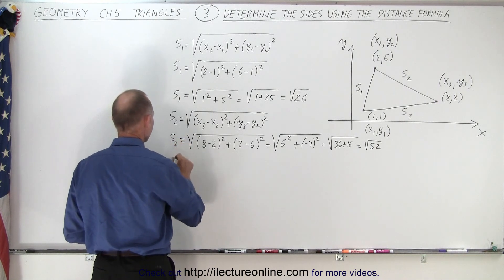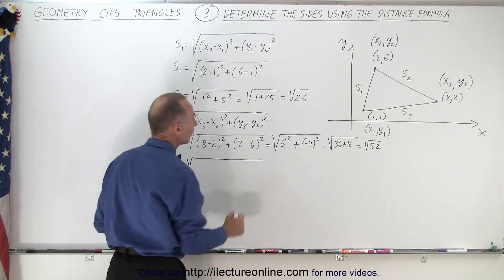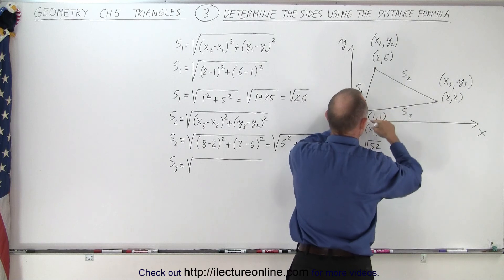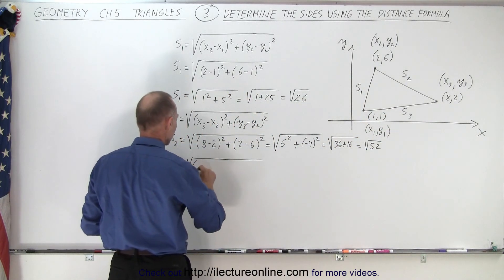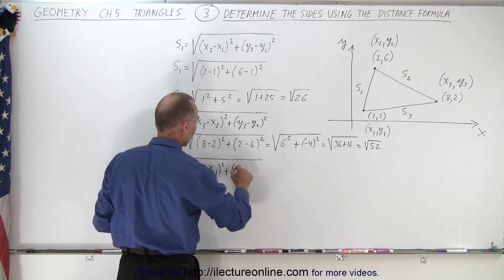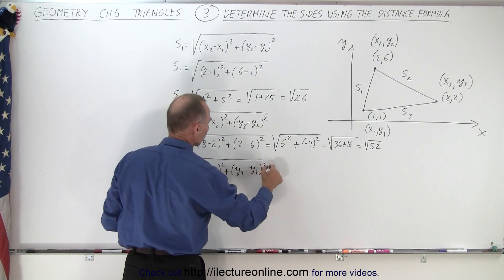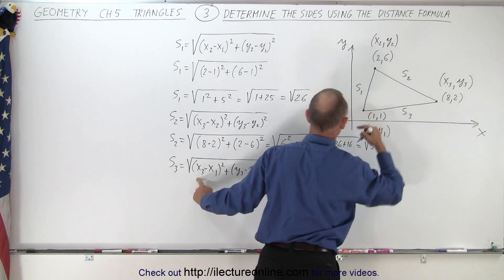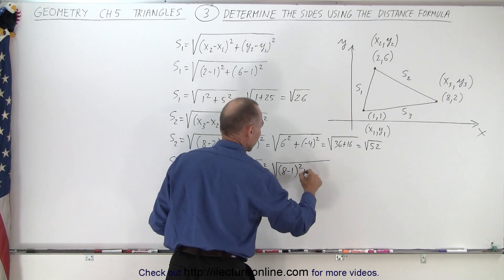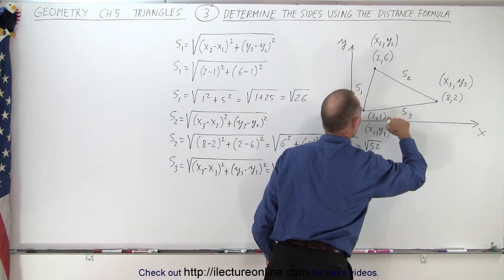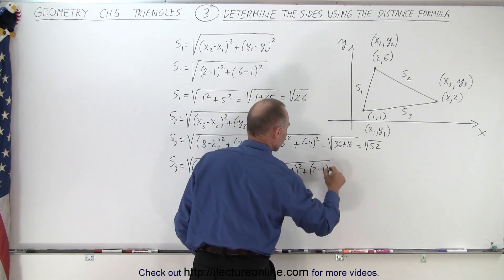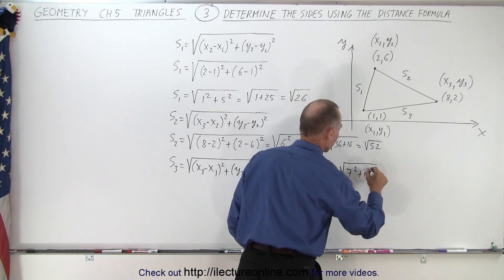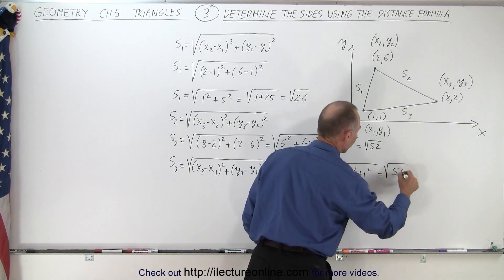All right, now we'll find S3. That is equal to the square root of—S3 will be the distance between these two points—so we can take x3 minus x1 and y3 minus y1. So this would be (x3 minus x1) squared plus (y3 minus y1) squared. In this case that's the square root of x3 is 8 and x1 is 1, so (8 minus 1) squared, plus y3 is 2, y1 is 1, so (2 minus 1) squared. That's equal to the square root of 7 squared plus 1 squared, which equals the square root of 49 plus 1, or 50.